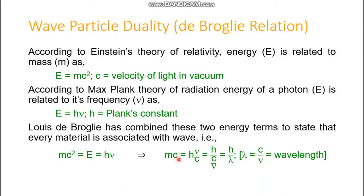Taking c to the right-hand side into the denominator, mc is left on the left-hand side, giving mc = hν/c. Then taking ν to the denominator of c, it further becomes h over c/ν. Since c/ν is nothing but wavelength, that is λ, we get mc = h/λ.